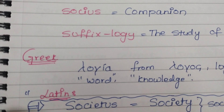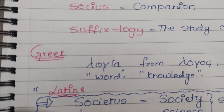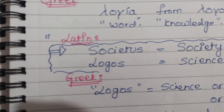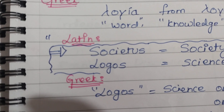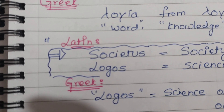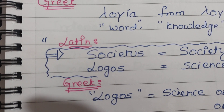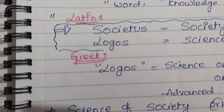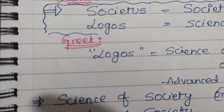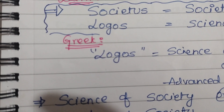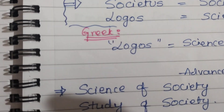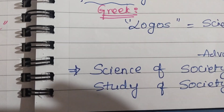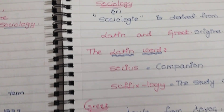In Greek, logos means knowledge or word. In Latin, sociatus means society, and logos means science. In Greek, logos also means science, study, or advanced study. Therefore, the science or study of society is called sociology.